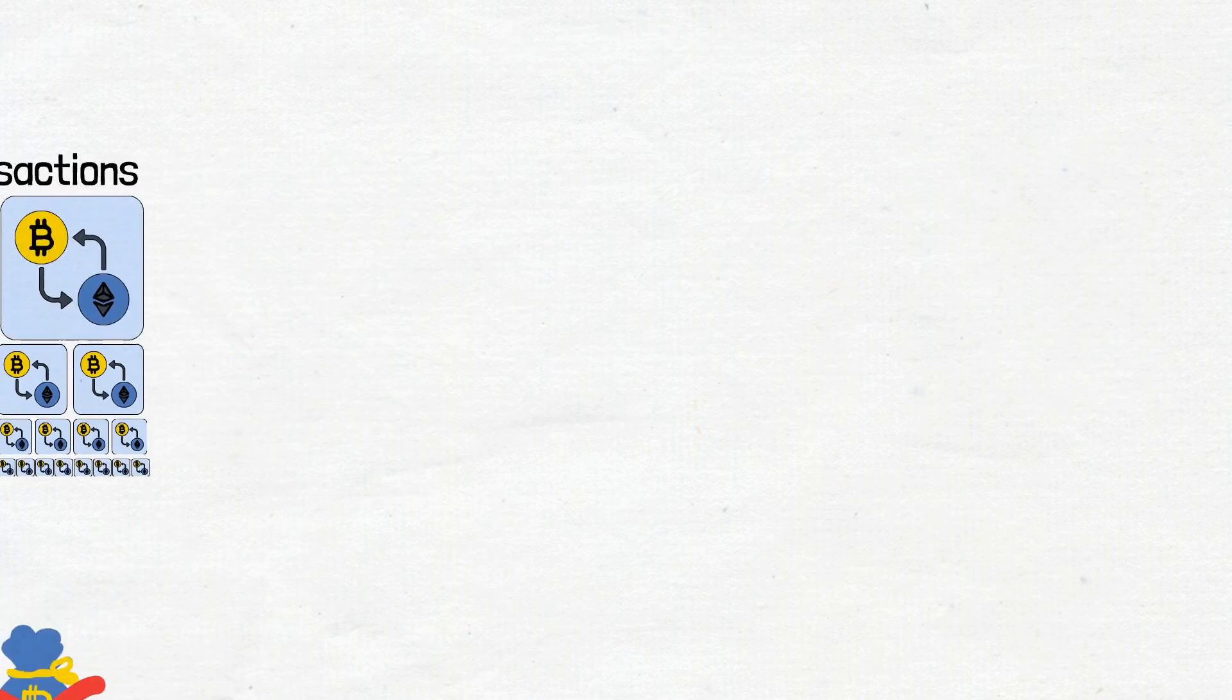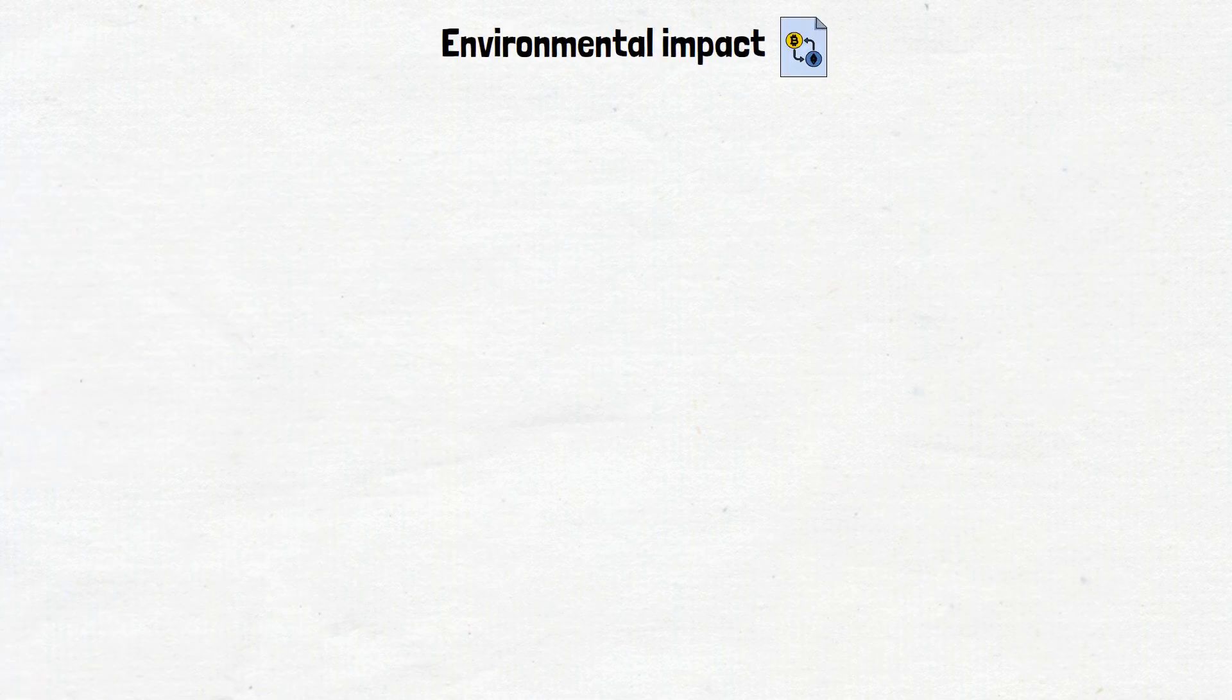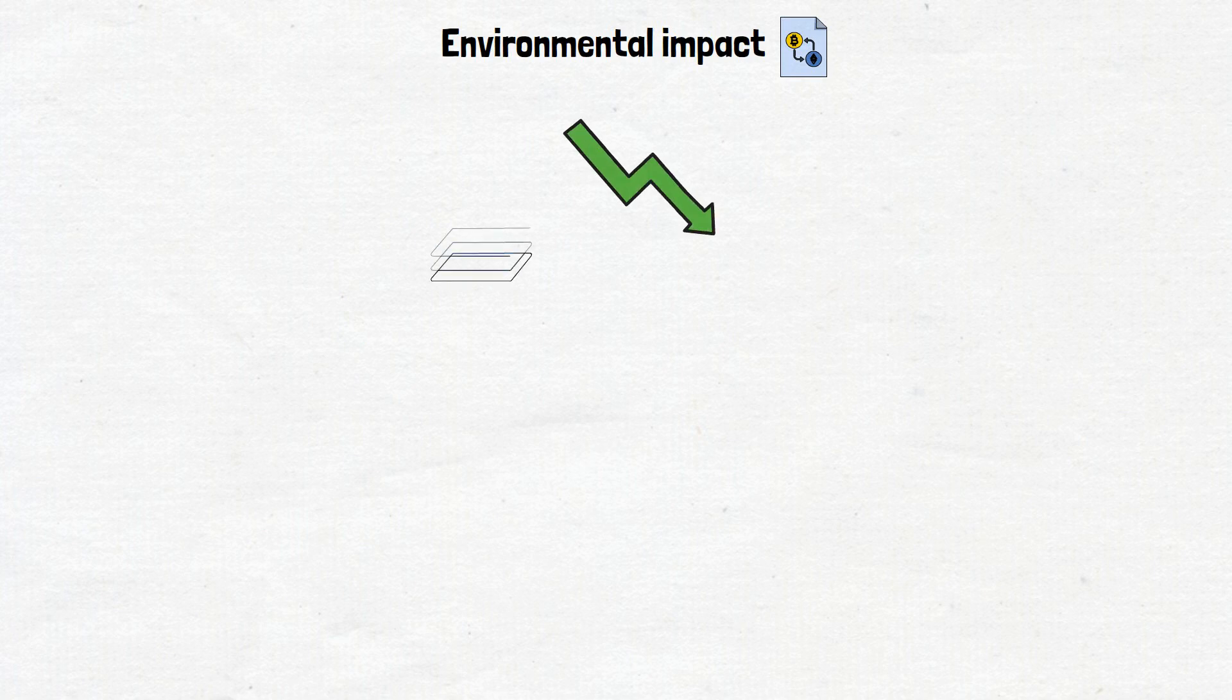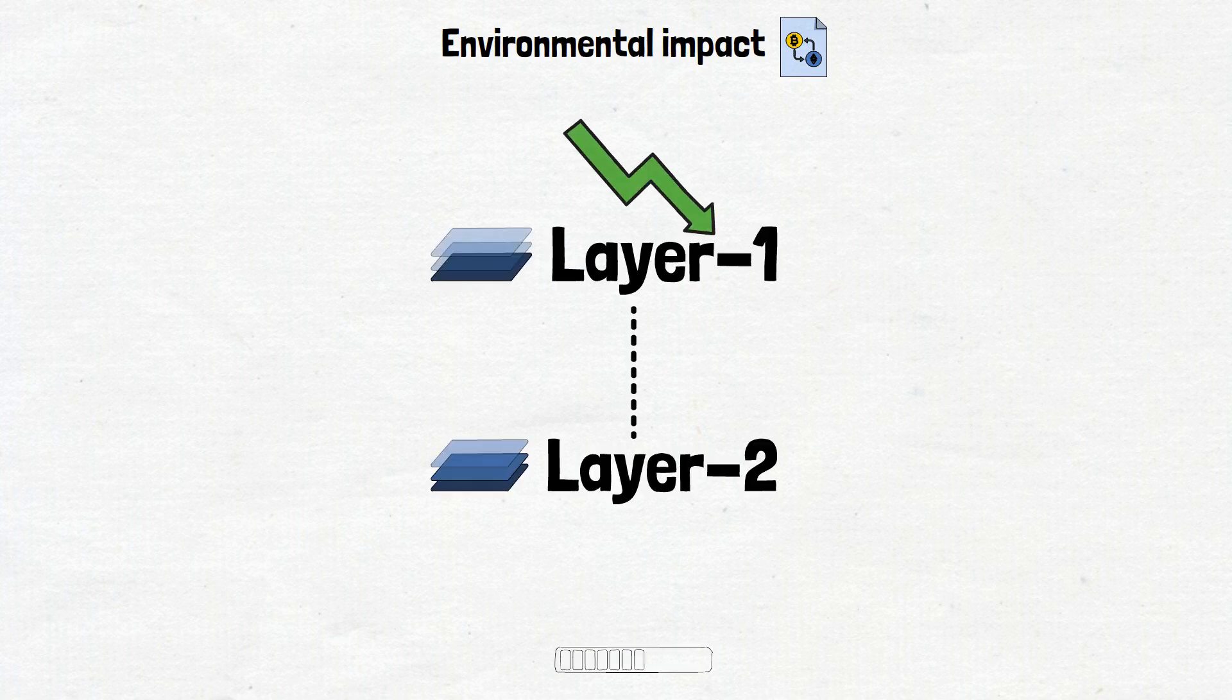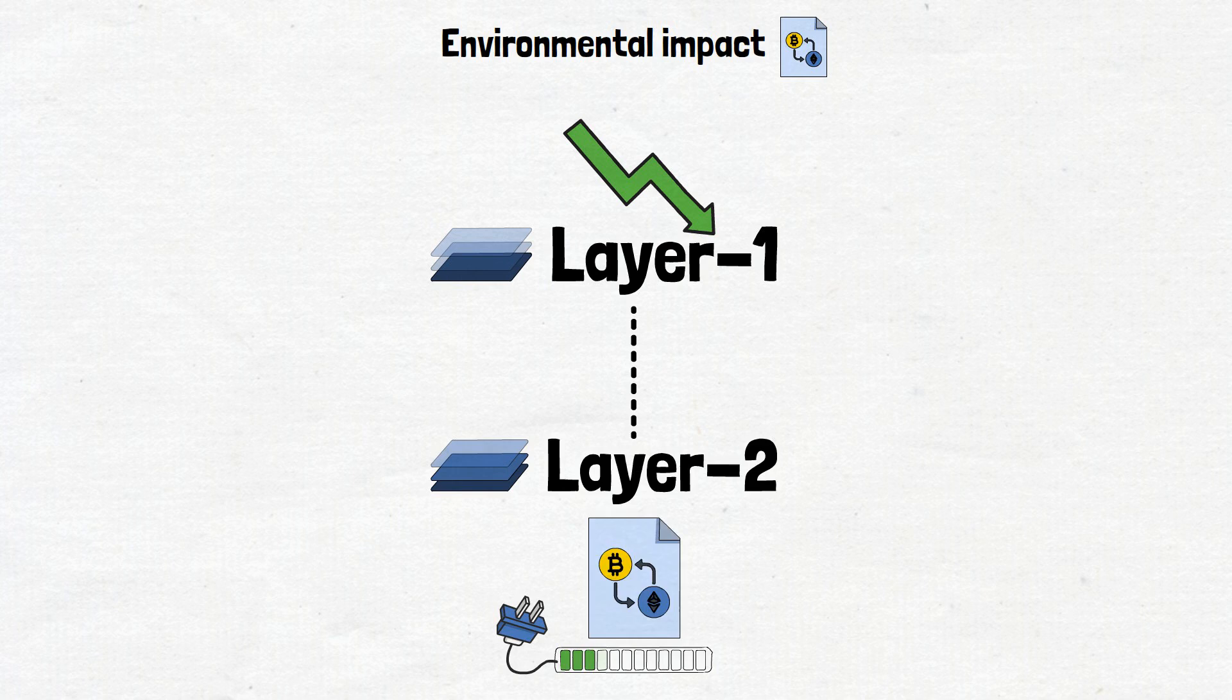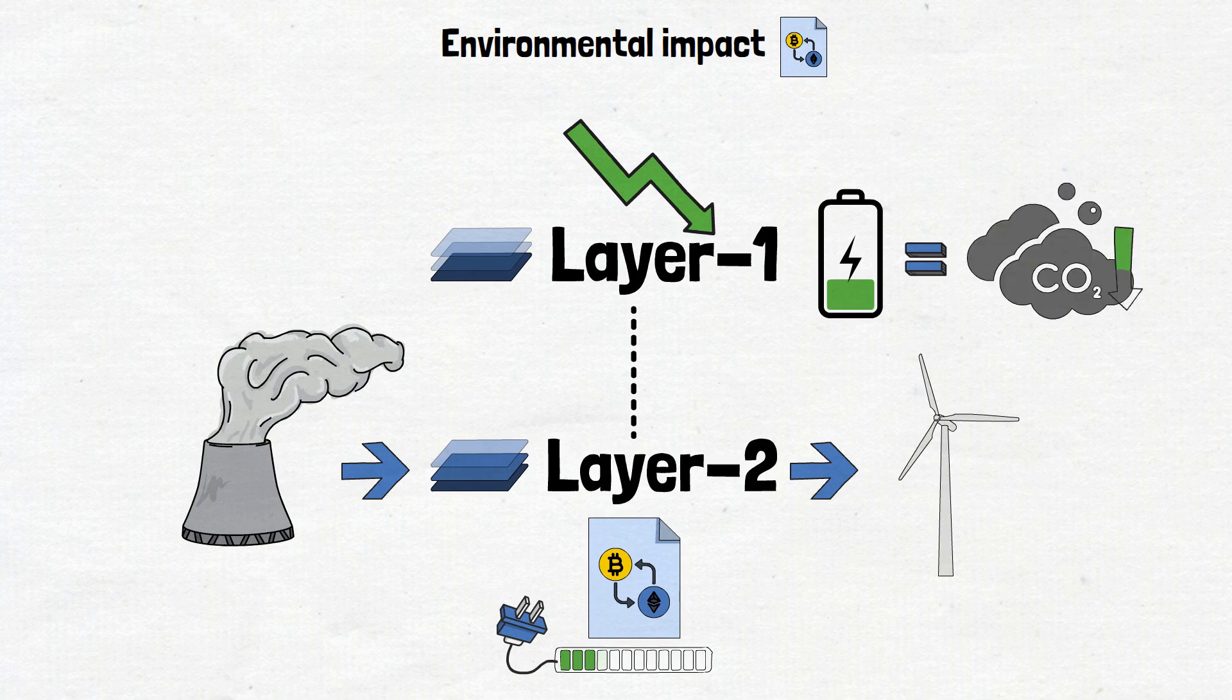Now, there's also a benefit regarding the environmental impact of crypto transactions. By reducing the strain on Layer 1, these solutions often require less energy for processing transactions. It's like switching from energy-guzzling appliances to eco-friendly alternatives. Less energy consumption means a smaller carbon footprint for the blockchain, contributing to a greener crypto ecosystem.